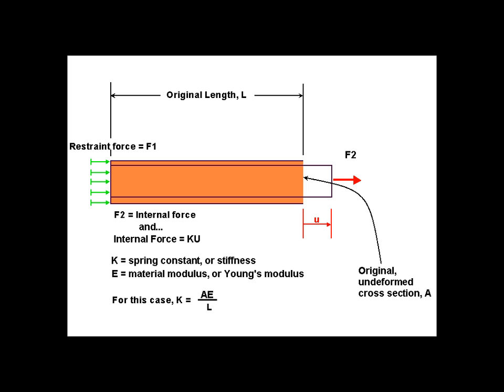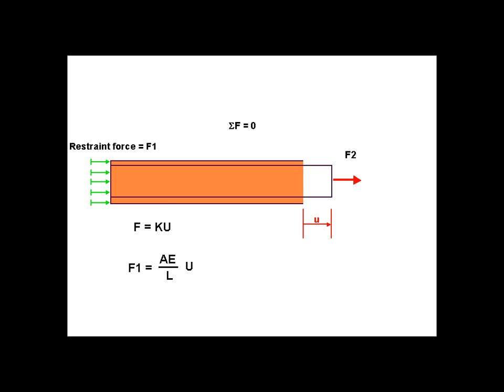So what are the unknowns? The unknown quantities are the displacement, strain, and stress. We can solve for the displacement U because we have the equilibrium equation. F1 is known and K is known, so we can solve directly from the equilibrium equation.